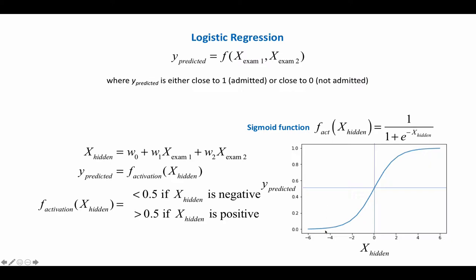Here is a plot of Y predicted versus X. You can see if X is less than 0, then Y predicted will be closer to 0 than it is to 1. And if X is positive, X hidden is positive, then Y predicted will be closer to 1 than it is to 0. It'll be above a half here and below a half here if X hidden is negative and positive respectively.